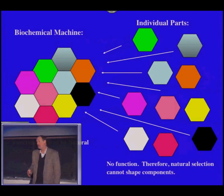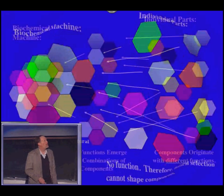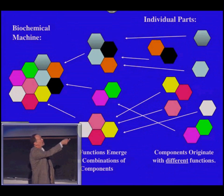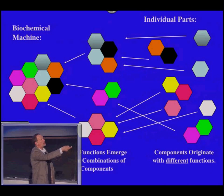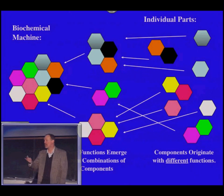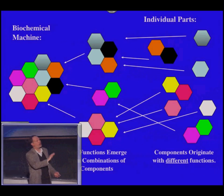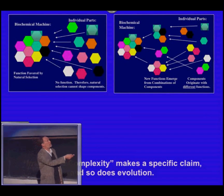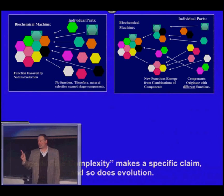How does evolution answer that? The answer is straightforward — the same way Charles Darwin did. Complex machines arise from simpler machines that have different functions, and the components of the machine originate with functions of their own. Now, that's not evidence, that's simply an argument. But here's the cool part: these two different explanations can be put side by side.